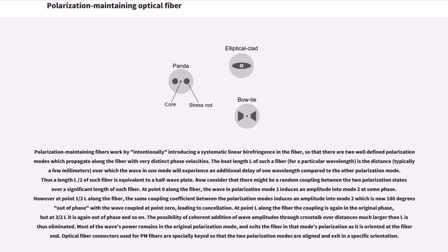Thus a length L/2 of such fiber is equivalent to a half-wave plate. Now consider that there might be a random coupling between the two polarization states over a significant length of such fiber. At point 0 along the fiber, the wave in polarization mode 1 induces an amplitude into mode 2 at some phase. However, at point L/2 along the fiber, the same coupling coefficient between the polarization modes induces an amplitude into mode 2 which is now 180 degrees out of phase with the wave coupled at point 0, leading to cancellation.